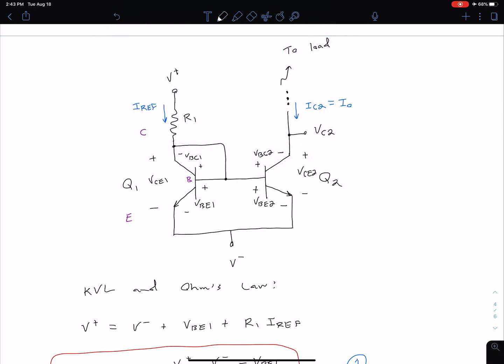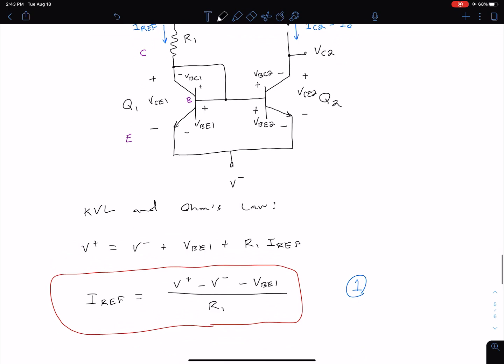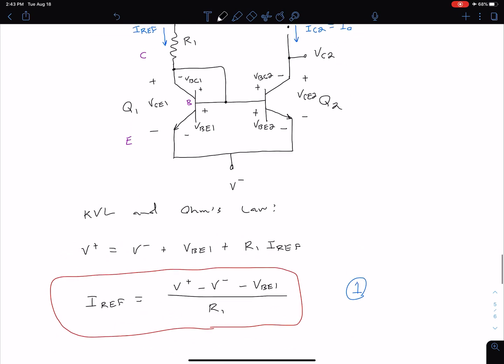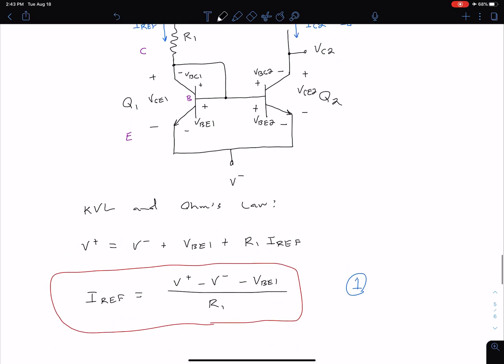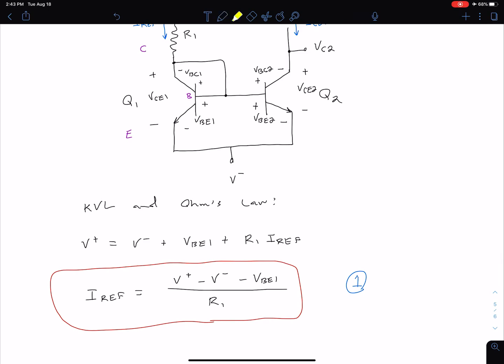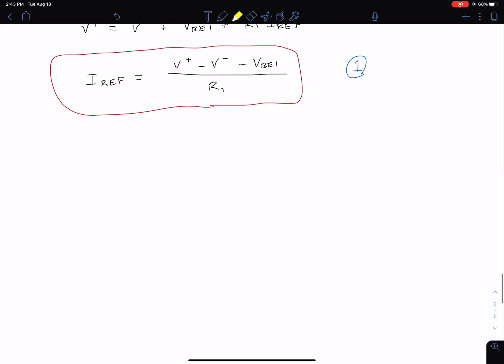One thing to note is that our VBE1 equals VBE2. We can see that by doing a KVL around this bottom loop here. So VBE1 equals VBE2. Now, because Q1 and Q2 are matched, that means we're going to have the same currents in these transistors.